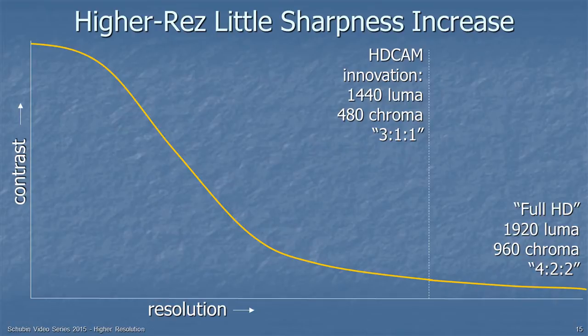When Sony introduced HDcam, and they weren't sure they'd be able to record the full HD signal, they decided to lop off the highest resolution — the luma at 1440 pixels per line instead of 1920 pixels per line. You can see on the chart there's a substantial loss in resolution, but very little loss of area under the curve. And it's the area under the curve that determines sharpness, so there was very little loss of sharpness in HDcam.